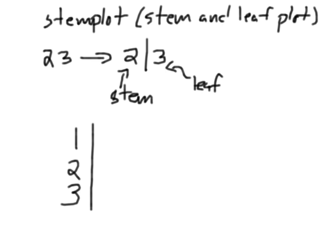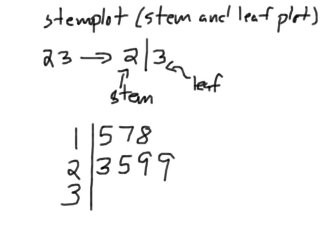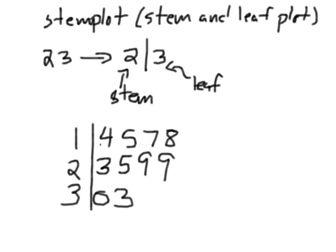Your leaves go in order. In the teens you've got 14, 15, 17, and 18. In the 20s you've got 23, 25, 29, and 29. In the 30s you have 30 and 33. Usually you draw a little key off to the side — for example, '1 | 4 represents 14 tomatoes.' That's a stem plot.